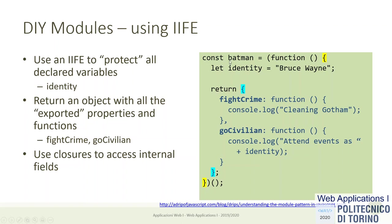So we return an object containing all the externally visible properties, and we use the immediately invoked function expression — a function is defined and immediately invoked, so we execute this code and return two properties stored in an object. At this point we can write batman.fightCrime() and batman.ghostCivilian(), but we cannot use batman.identity because batman is not the body of the function but just this object. The identity is only used as a closure variable by the ghostCivilian function. This is the basic mechanism we already know — it relies on objects and closures, nothing more.